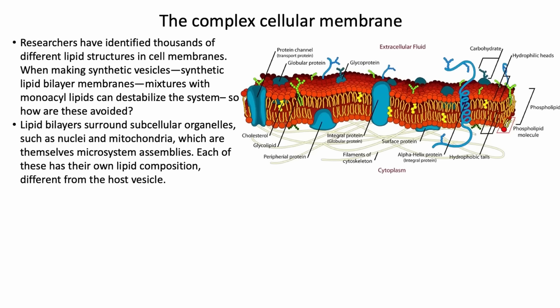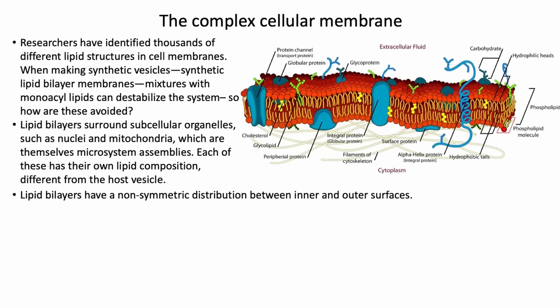Lipid bilayers surround subcellular organelles such as nuclei and mitochondria, which are themselves microsystem assemblies. Each of these has their own lipid composition. So this is a lipid bilayer — you have some pointing out toward water, some pointing in toward the water on the interior of the cell, and the outside ones are different than the inside ones. Nobody knows how that was done. Every protocell experiment just uses homogeneity throughout the whole thing, and so it's not really a protocell. It's not really reminiscent of a cell.